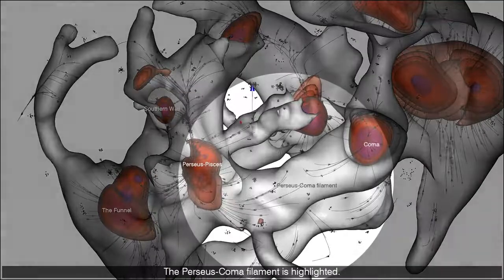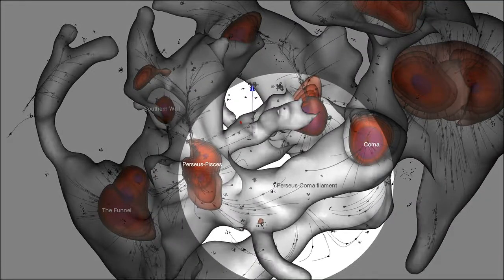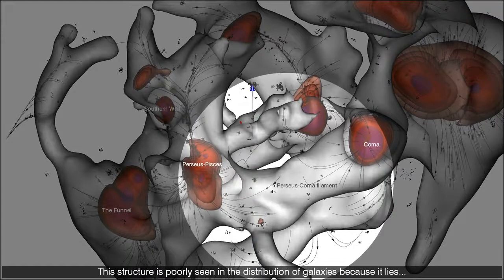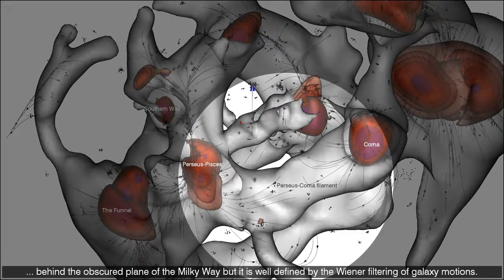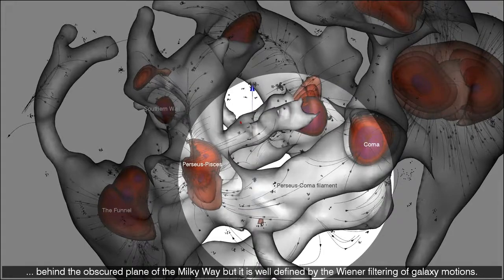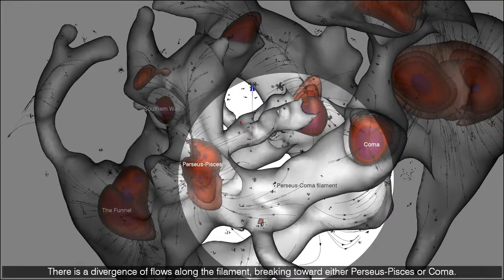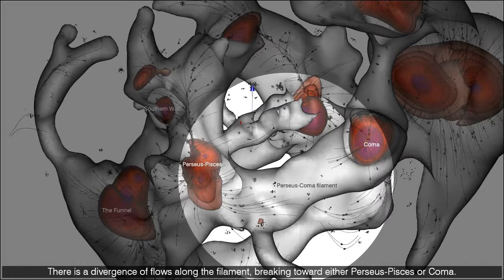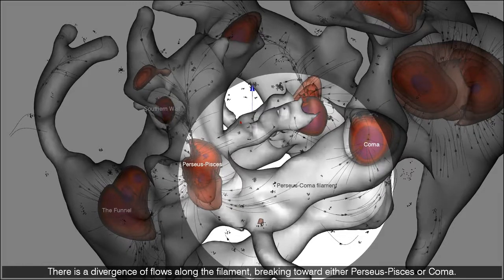The Perseus Coma filament is highlighted. This structure is poorly seen in the distribution of galaxies because it lies behind the obscured plane of the Milky Way, but it is well defined by the Wiener filtering of galaxy motions. There is a divergence of flows along the filament, breaking toward either Perseus Pisces or Coma.